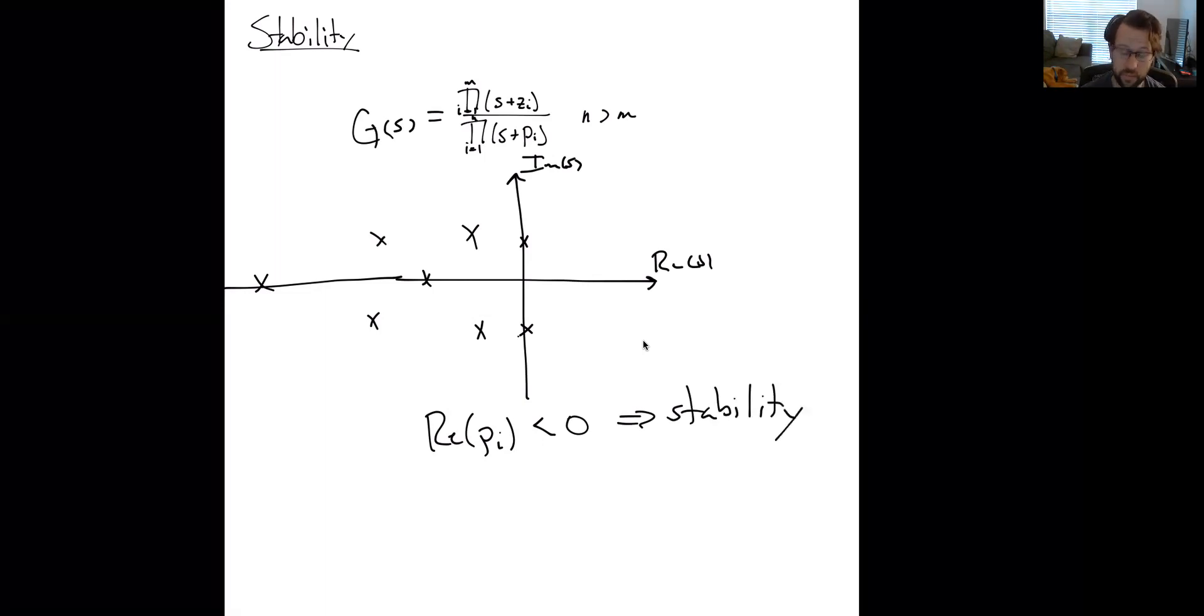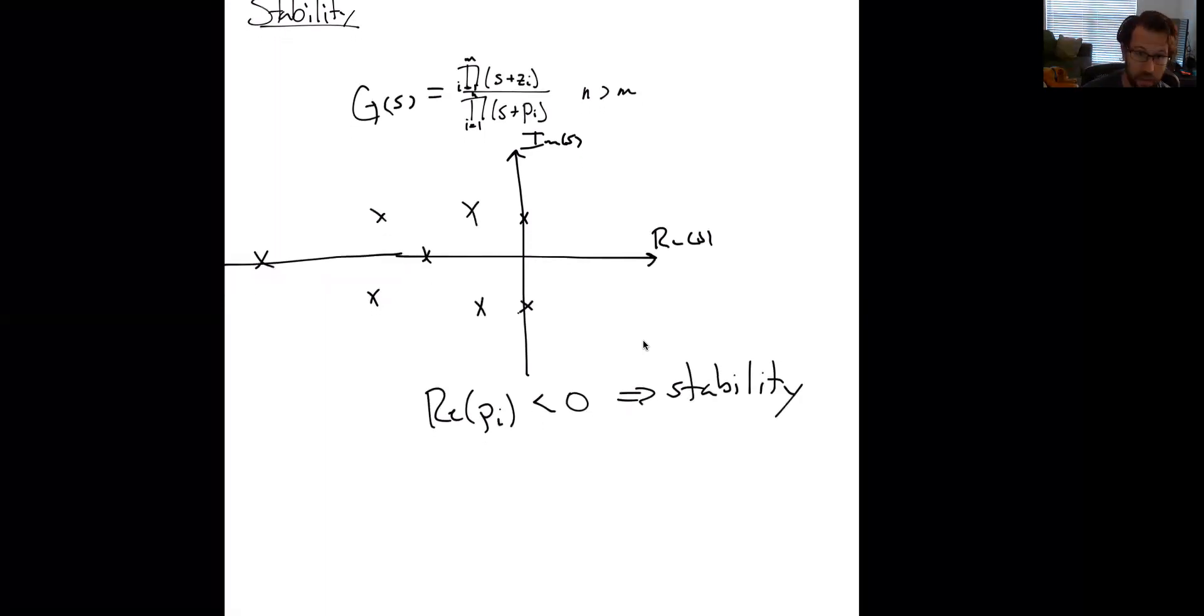We also said that if there were some on the imaginary axis, then that's marginal stability, as long as you only had a single pole on those points. But the crux was that the real components of our poles pi is less than 0. This implies stability. However, for general nonlinear systems, this doesn't work because we can't just take a nonlinear system and plug it into a transfer function form. We can linearize it about a point, but that'll only tell us locally about the system and won't tell us globally about the system.